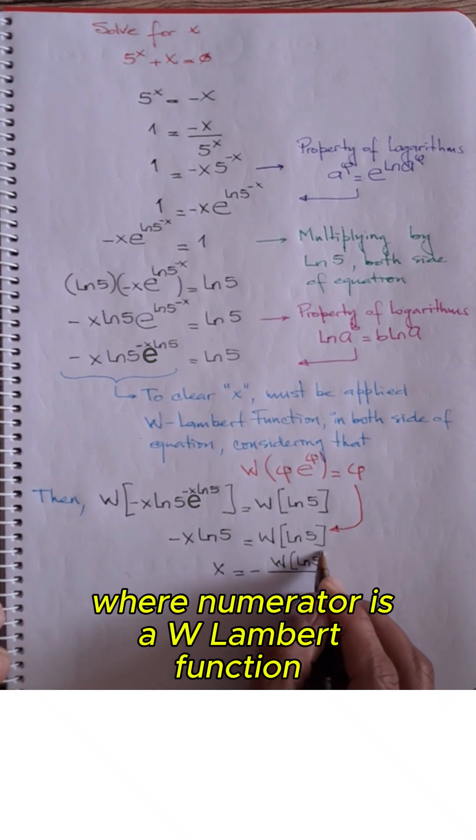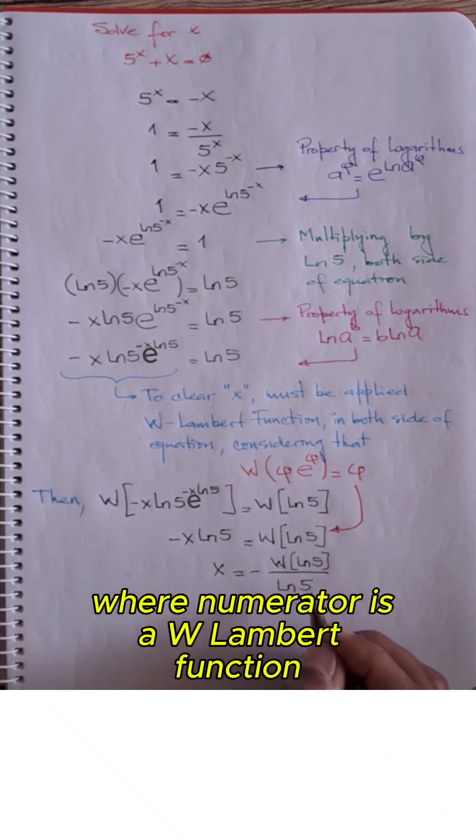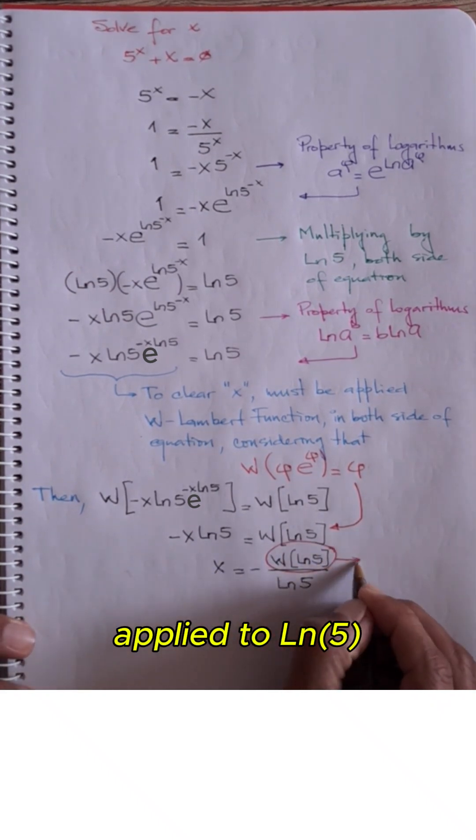Solving for x, we have a division where the numerator is the W Lambert function applied to neperian of 5.